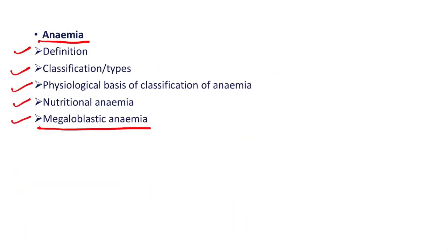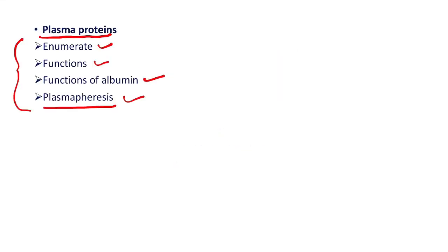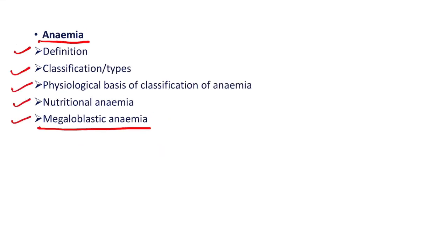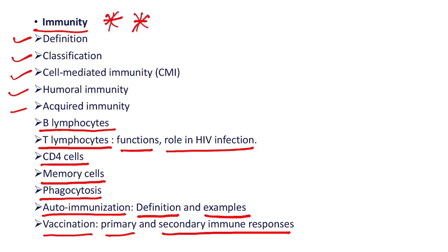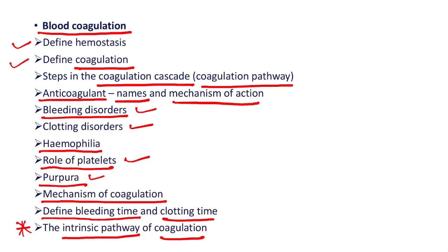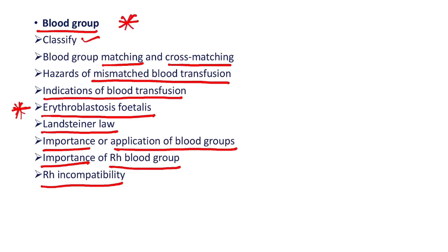So, all these are the important topics in hematology. In this system, every topic I have mentioned is important. Out of these, questions are asked frequently on plasma proteins, erythropoiesis, anemia, leukocytes — and here, immunity is most frequently asked. Immunity is very important. Then, blood coagulation is very important, and blood group is also important. These are all the important topics in hematology. That is all for this video. Thank you.